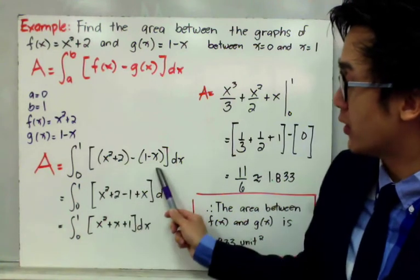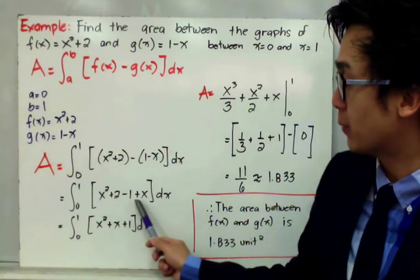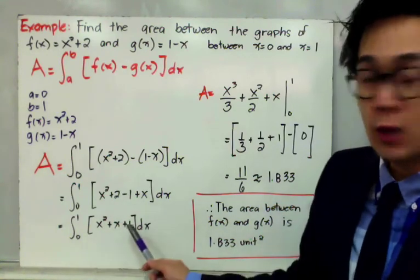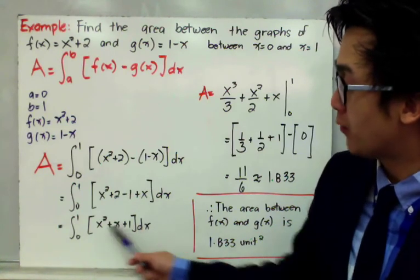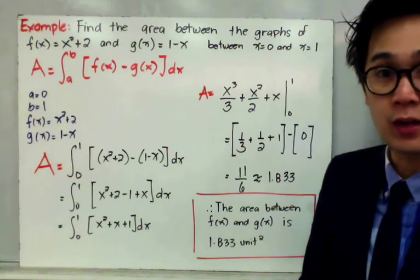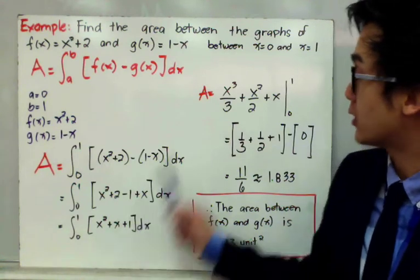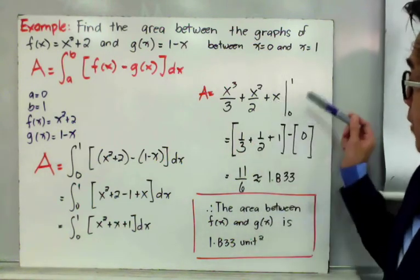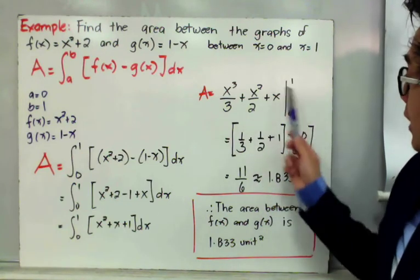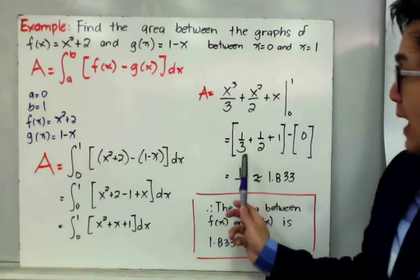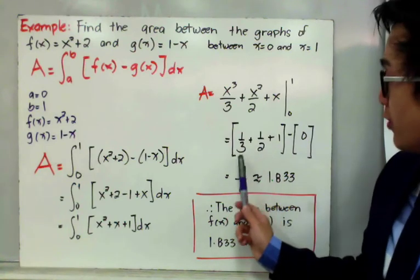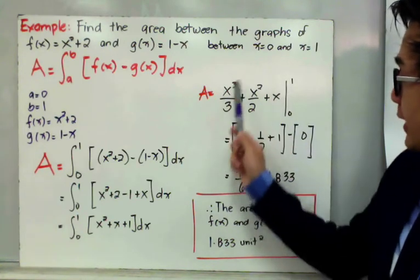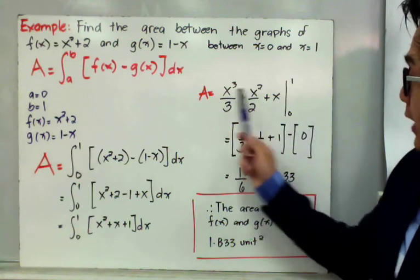By simplifying our function, we'll have x² + 2 - 1 + x, which is x² + x + 1. Now that we have simplified our integral function, we can integrate x² + x + 1 from 0 to 1 by the usual process. The integral is x³/3 + x²/2 + x, evaluated from 0 to 1. By applying the upper limit minus the lower limit, we'll have 1/3 + 1/2 + 1 minus 0, because plugging x = 0 gives zero.